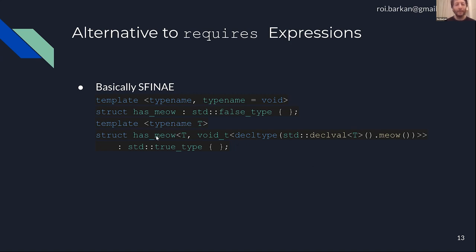This allows us to define has_meow. This was only possible before C++20. Basically every attempt to create a Boolean out of a type was possible even before C++20, but with requires expressions it's much easier.